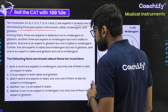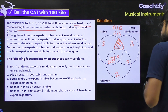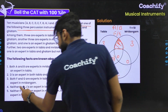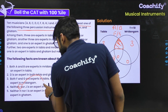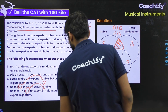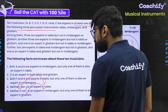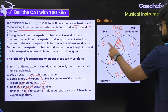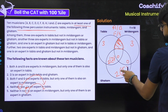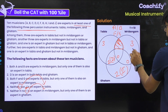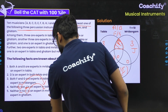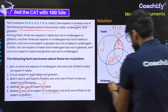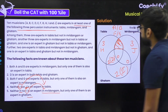Neither I nor J is an expert in tabla, and neither H nor I is an expert in mridangam. Focusing on I: I is not an expert in tabla and not an expert in mridangam, so I will be placed in the only-ghatam region. J is not an expert in tabla either, and since there is only one musician in the tabla-ghatam region, J will be placed in the only-mridangam region. H is not an expert in mridangam, so H will be in the only-tabla region. Only one of these is an expert in ghatam.